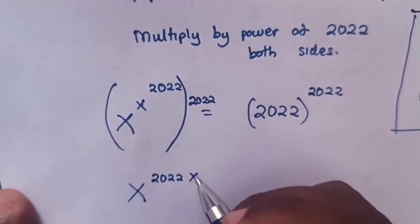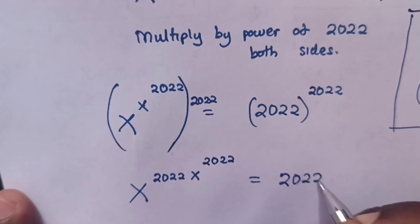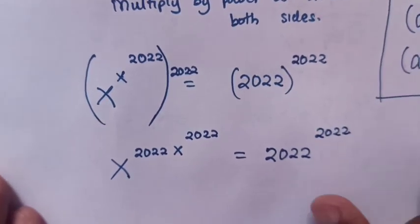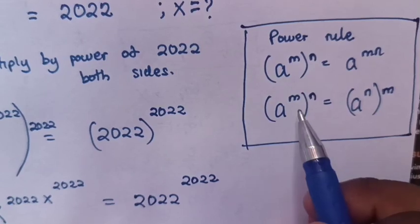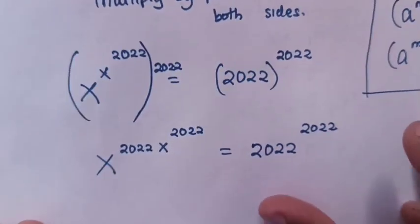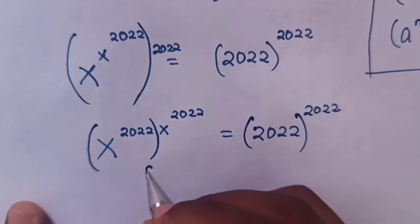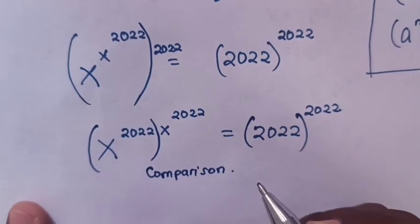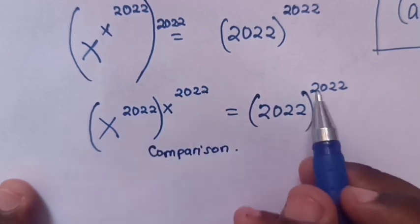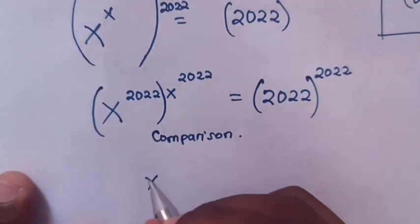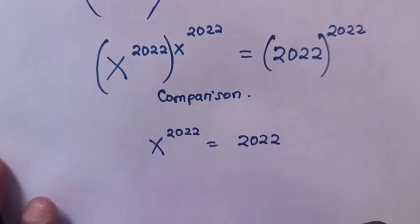Here 2022 multiplies by x, so it becomes x power of 2022. x power of 2022 equals 2022 power of 2022. Then from here, we apply the power rule of exchanging the power inside the bracket, placing brackets accordingly. The next step is comparison — we compare the numbers inside the bracket and the powers. So x power of 2022 equals 2022, because the powers and numbers inside the bracket are the same.